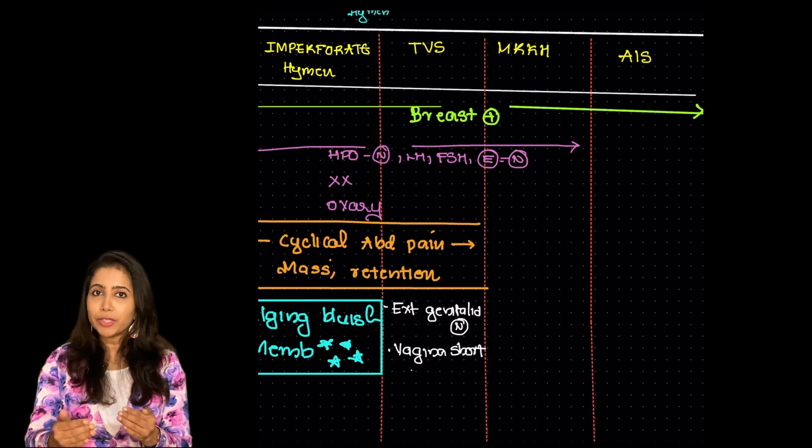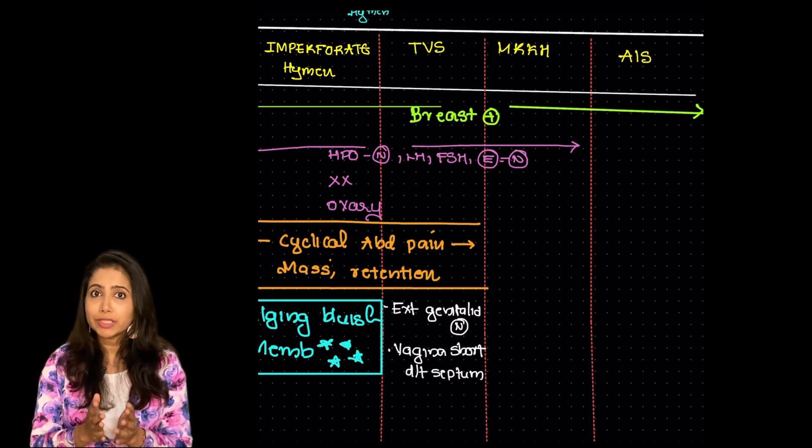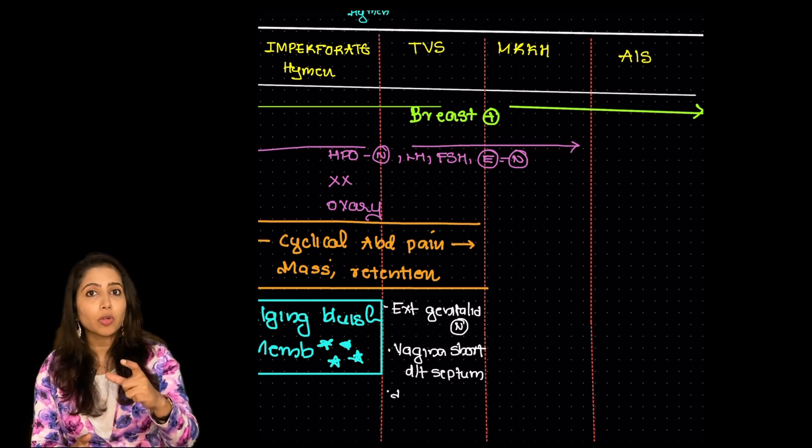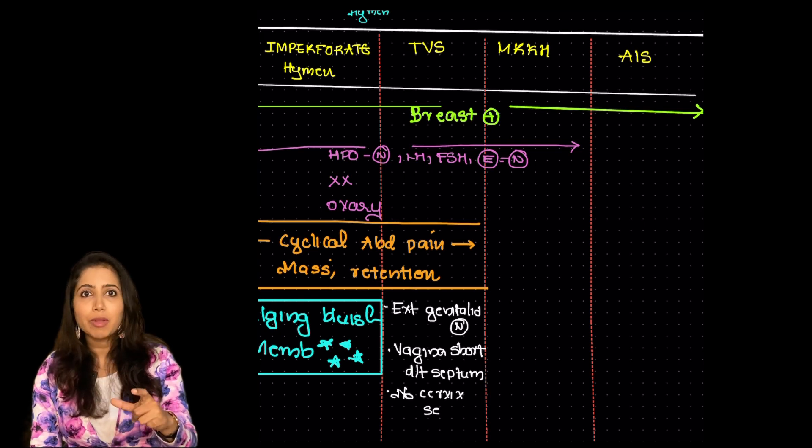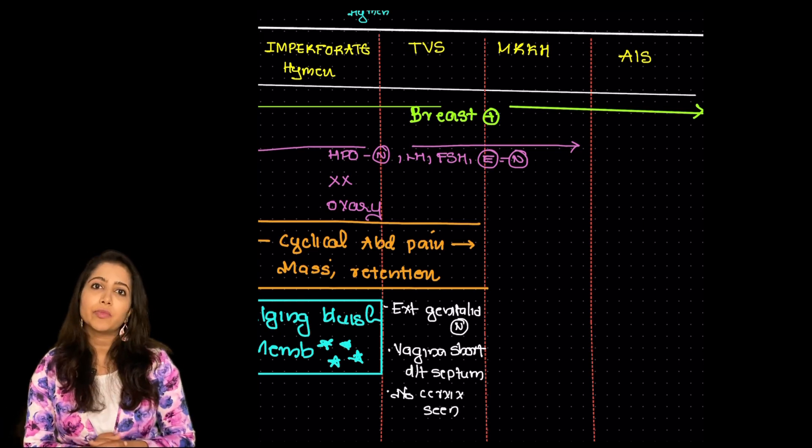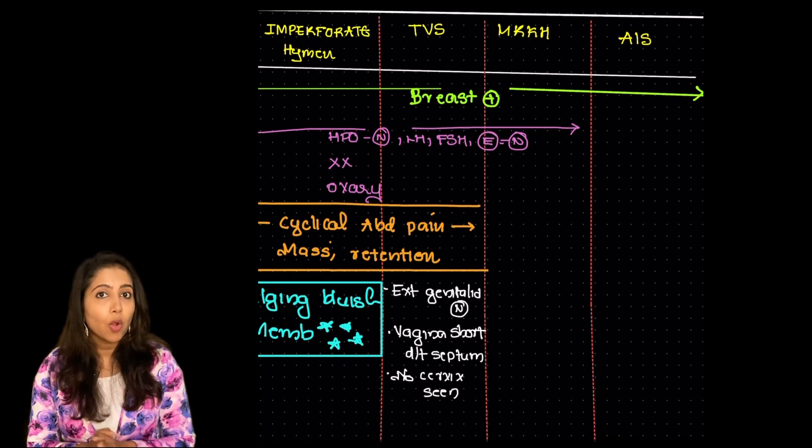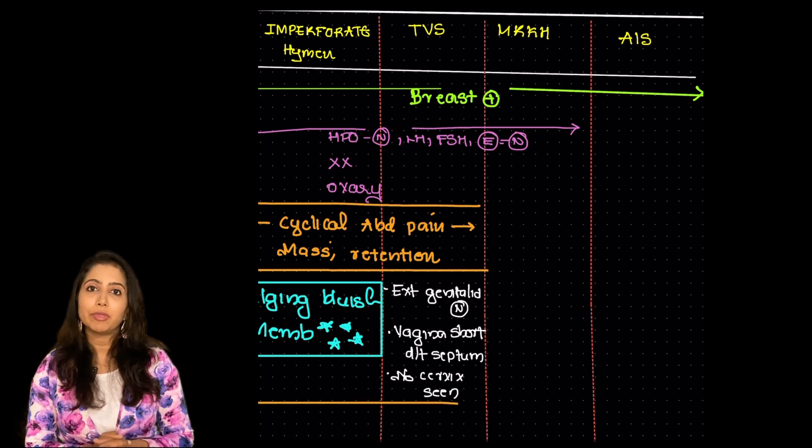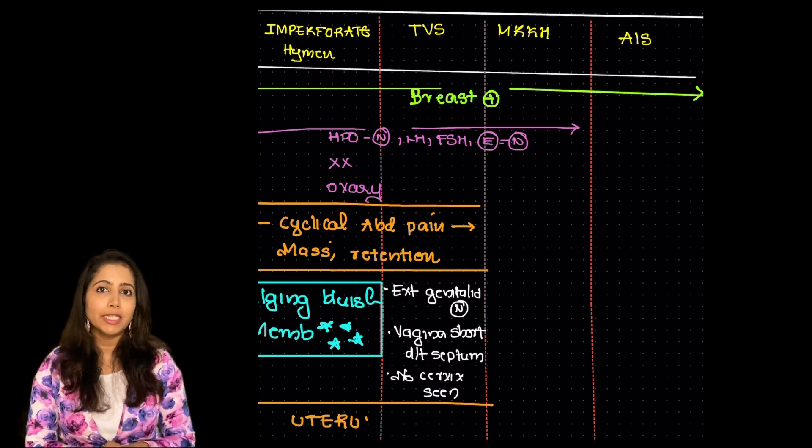Whereas in case of a transverse vaginal septum while we see from outside it appears to be normal because the septum is higher up. So while we do an internal examination we will see that the vagina appears short due to the transverse vaginal septum and the cervix is not seen. In both of these conditions while we do a perrectal examination we can feel the uterus.